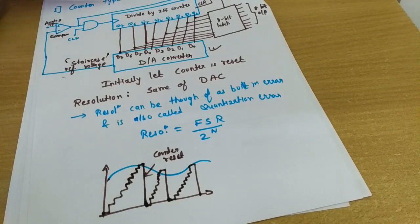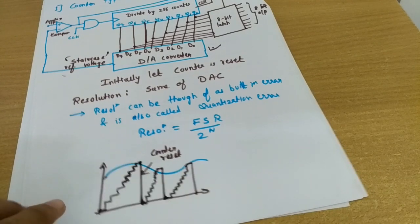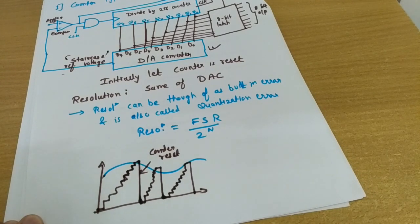From the next lecture, we will discuss one more type, which is called the tracking-type ADC.